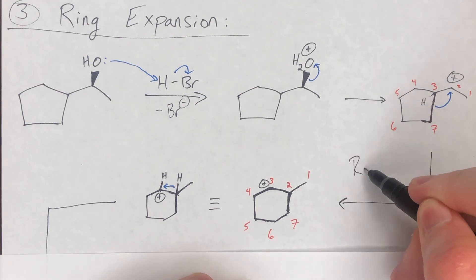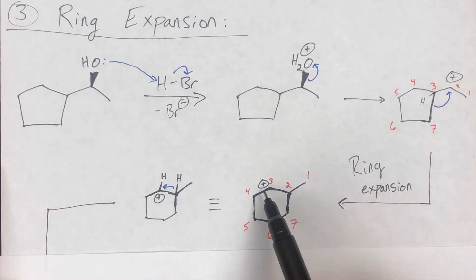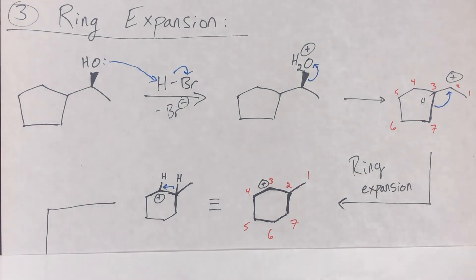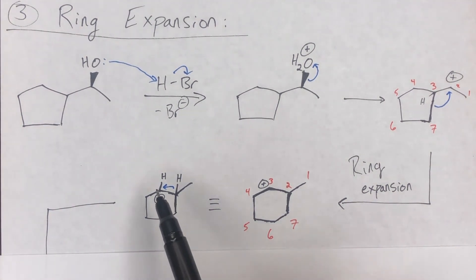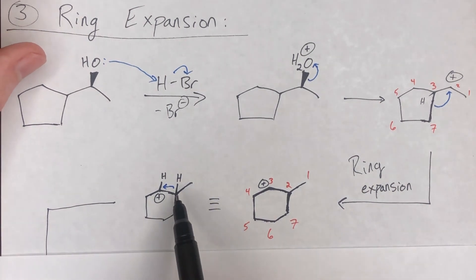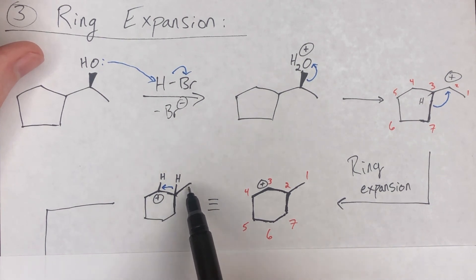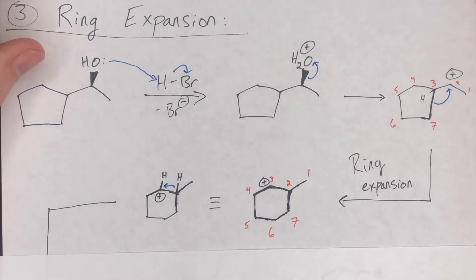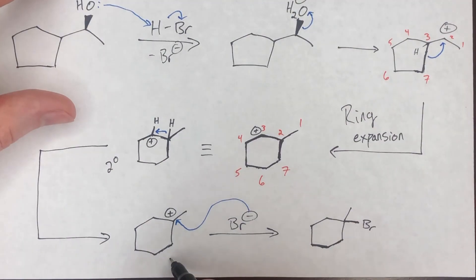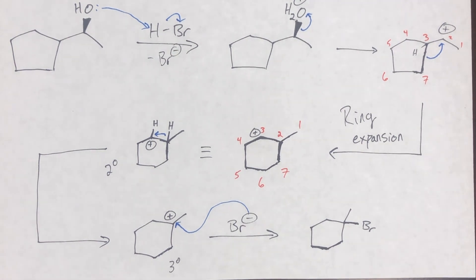That adjacent position is tertiary because of the three bonds there — so we've gone from secondary to tertiary, which is a favorable carbocation rearrangement. Once you reach that tertiary carbocation, bromine — the Lewis base/nucleophile — attacks the carbocation and creates the product.